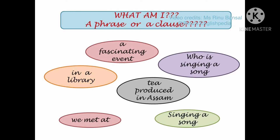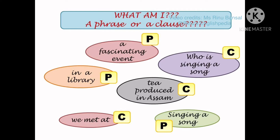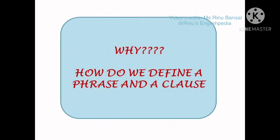A fascinating event, in a library, tea produced in Assam, who is singing a song, we met at, and singing a song — let's verify. A fascinating event, in a library, and singing a song are just phrases, whereas who is singing a song, tea produced in Assam, and we met at are clauses. But why do we call them phrases and clauses? How do we classify them?